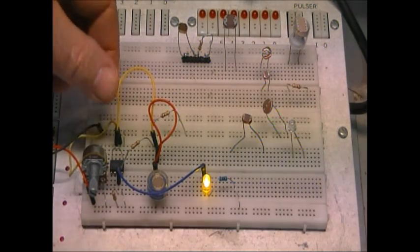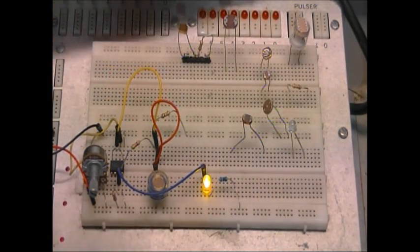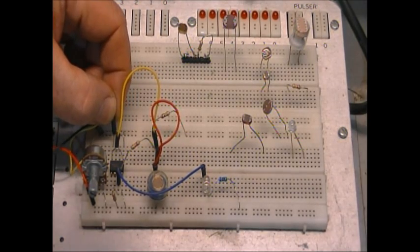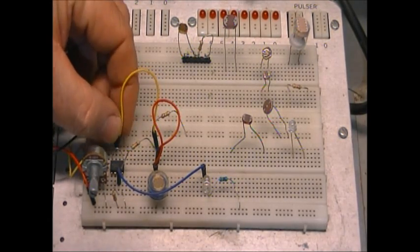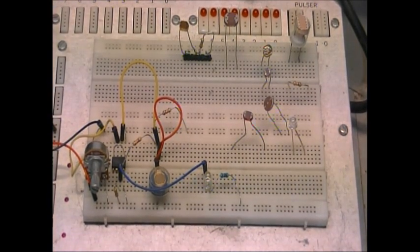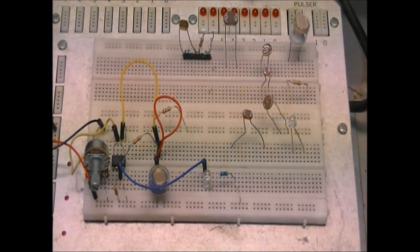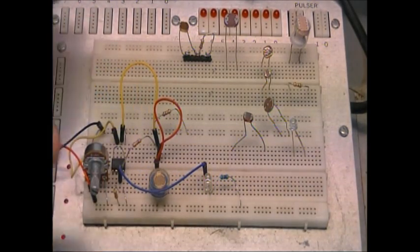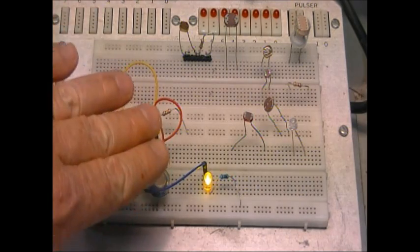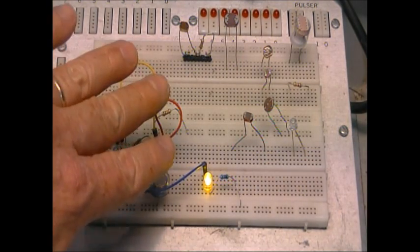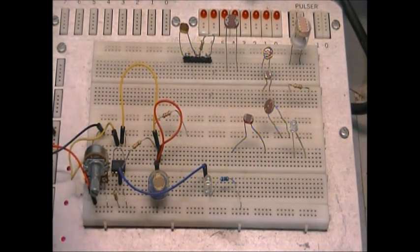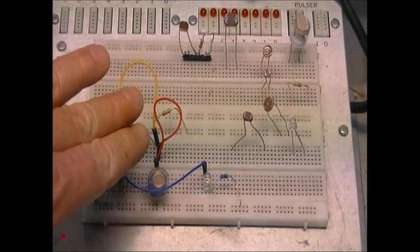Now, I'm going to reverse the plus and minus inputs on the comparator. Now, you notice the LED is off. If I cover up the cell, it will come on. So, just by reversing the inputs, the plus and minus, on a comparator, be it an op-amp or an LM311.